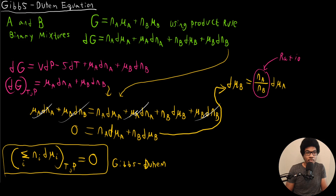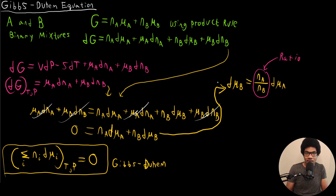This ratio between the two components is very important in determining how big an effect the chemical potential of one component has on another. Furthermore, the importance of the Gibbs-Duhem relationship doesn't stop at chemical potential. You can derive this relationship for any partial molar quantity — partial molar internal energy, enthalpy, and even partial molar volume all have this same Gibbs-Duhem type relationship for multi-component systems.